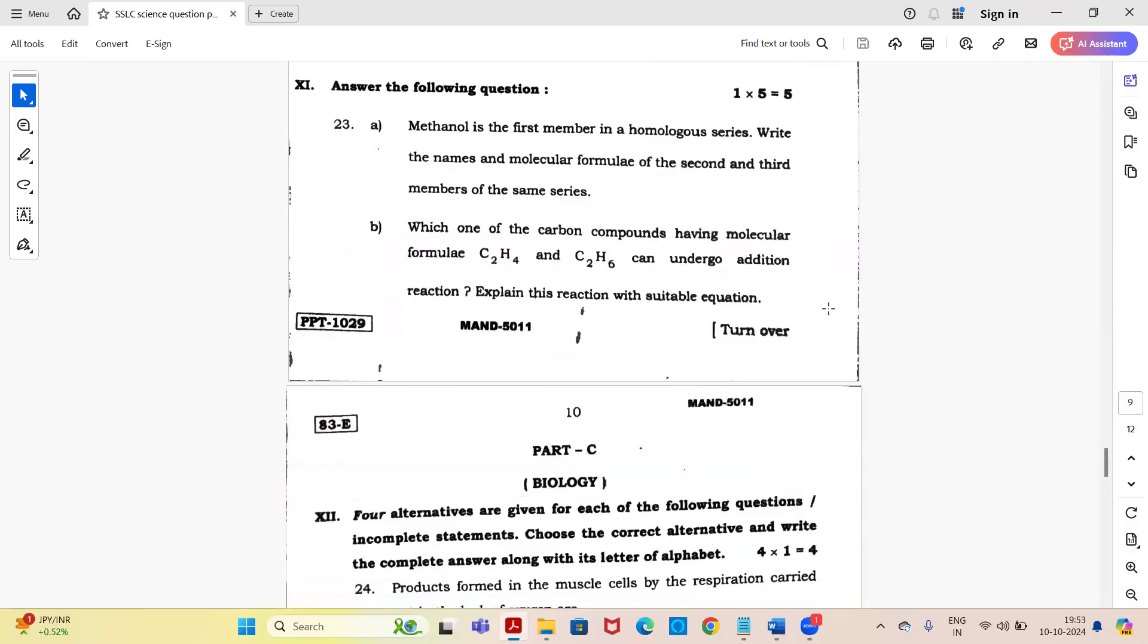Next, five mark question. Question 23A: methanol is the first member in a homologous series. Write the names and molecular formulae of the second and third members of the same series. Sub question B: which one of the carbon compounds having molecular formula C2H4 and C2H6 can undergo addition reaction? Explain this reaction with suitable equation. These were the chemistry questions.